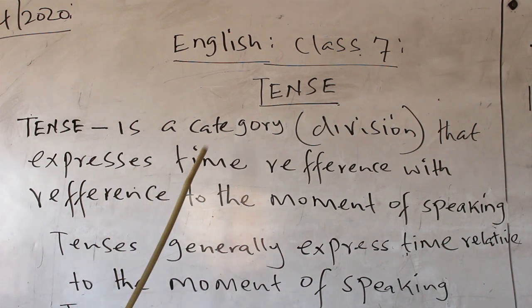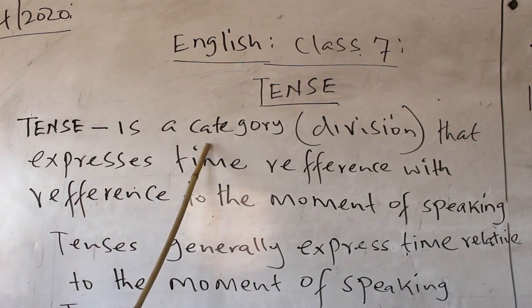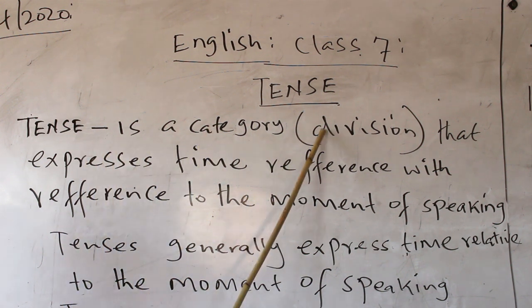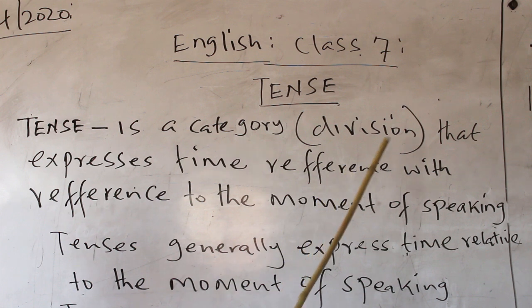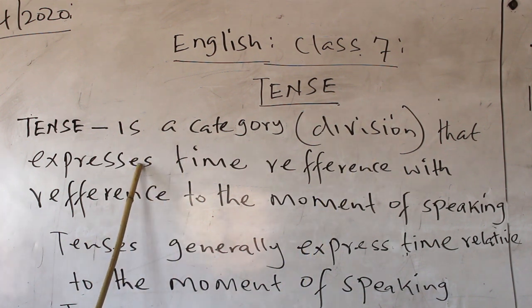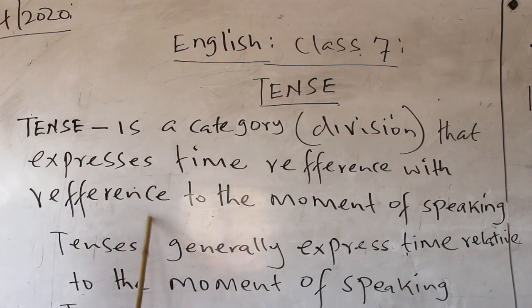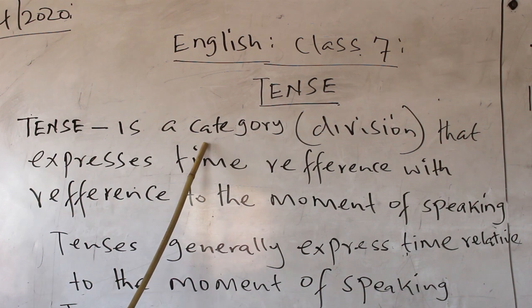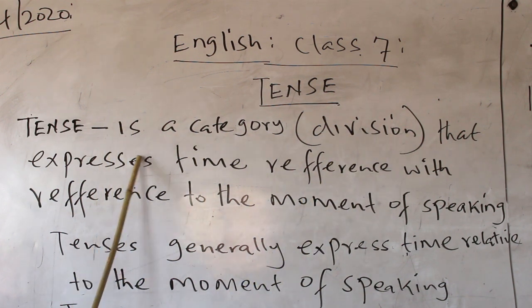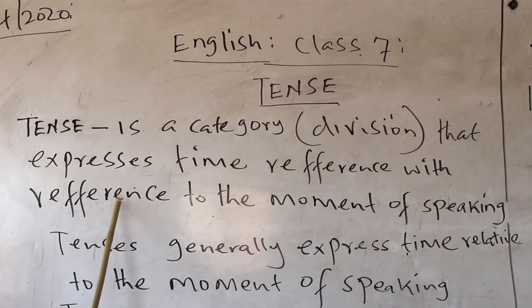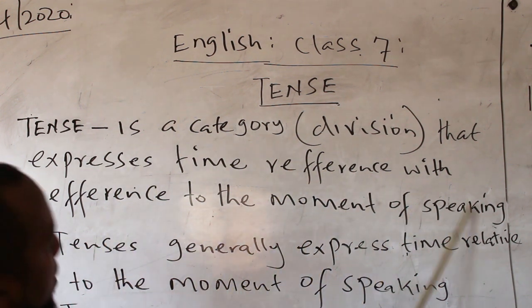First of all, we are going to define what tense is. By definition, tense is a category — category means division — that expresses time reference, with reference to the moment of speaking.